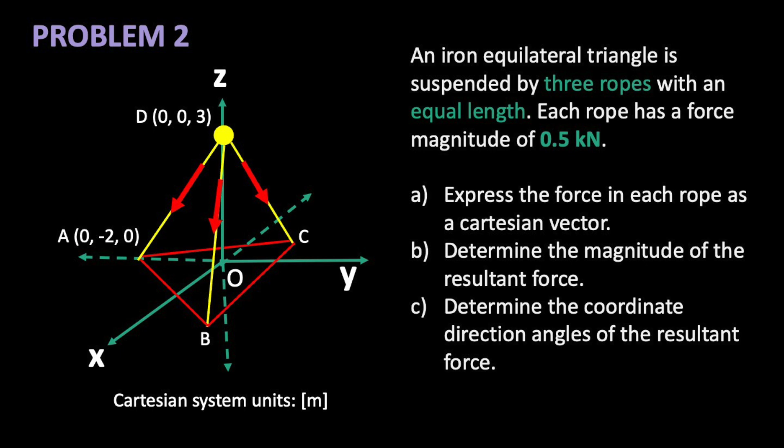First, express the force in each rope as a cartesian vector. Then find the resultant force supporting the triangle. Lastly, find the coordinate direction angles of the resultant. This problem seems like a lot, but it's mostly just repetition.